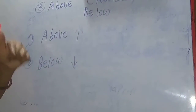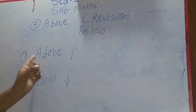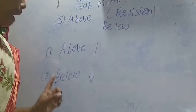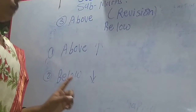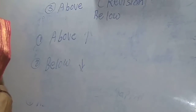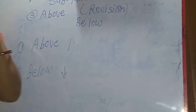Above and below — I hope you understand. Okay. Today's homework is: write A-B-O-V-E and B-E-L-O-W in a box. Okay, very good. Bye bye.